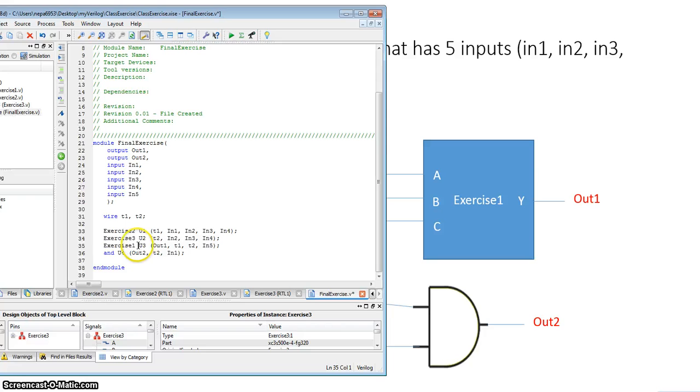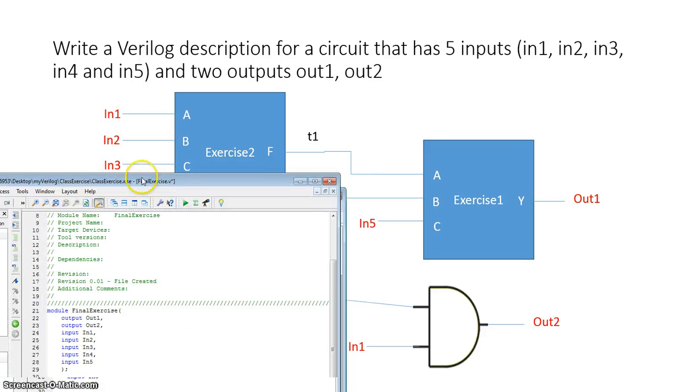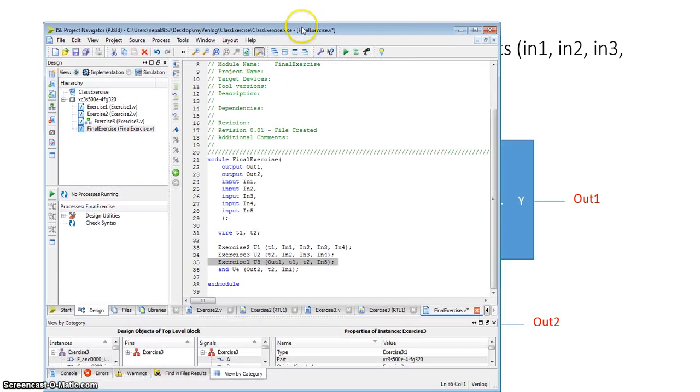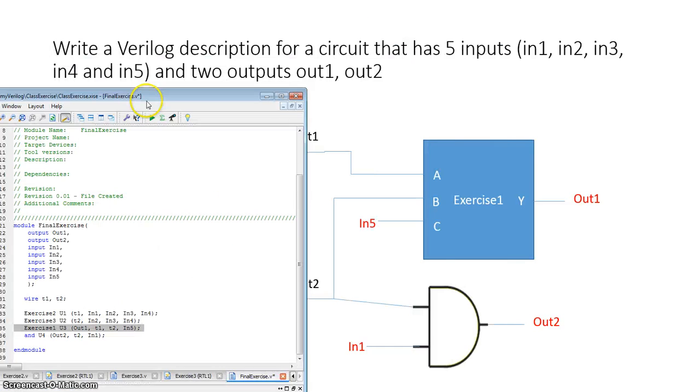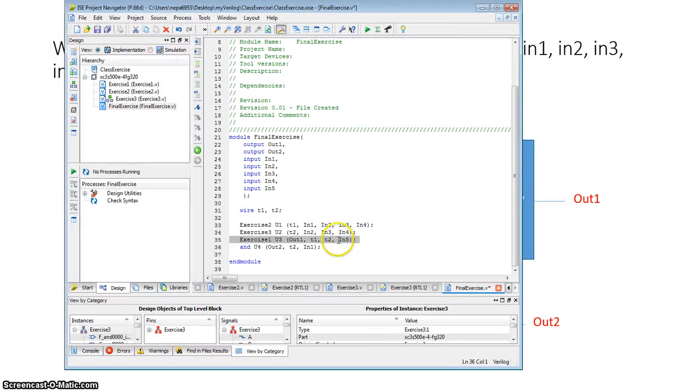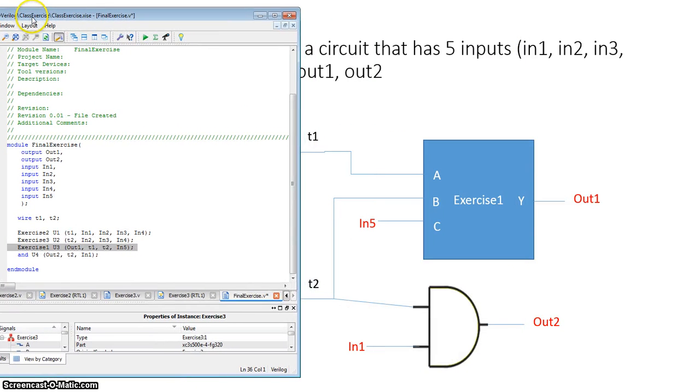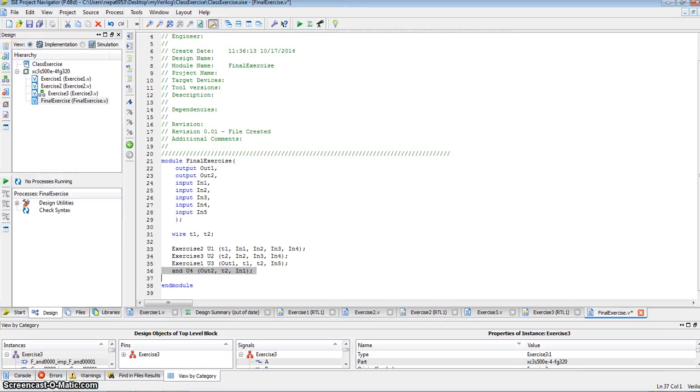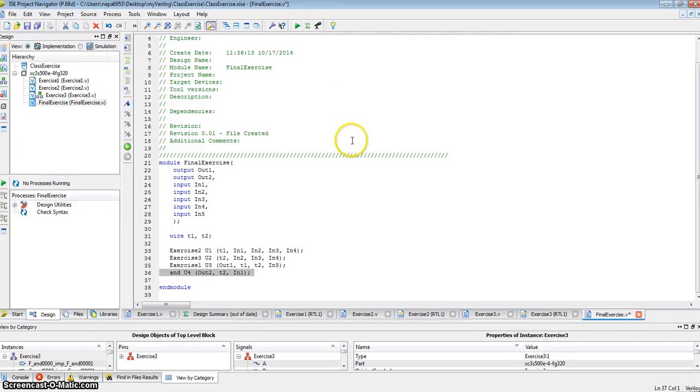Exercise number one has an output called out1, and inputs called t1, t2, and in5. And finally, the output AND gate, instantiated as u4, outputs out2, input is t2 and in1. So we've created a structural description of this circuit. So a structural description of that block diagram consisting of three previously created modules. So let's save this.